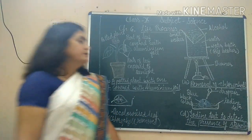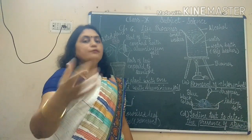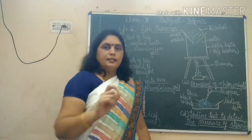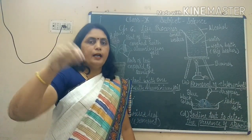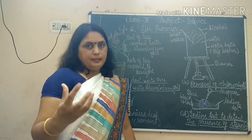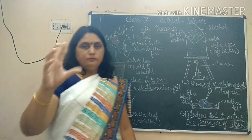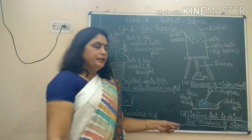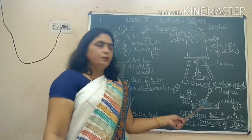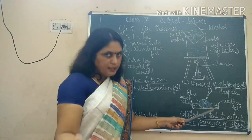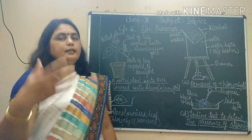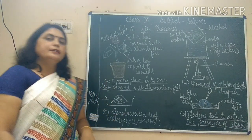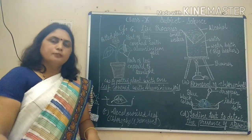This test is called the starch test. When a few drops of iodine are dropped on a substance containing starch, the starch turns blue-black. The parts exposed to sunlight become blue-black because they have starch, while the part not exposed to sunlight did not have starch and remains colorless. This experiment proves that sunlight is necessary for the process of photosynthesis.